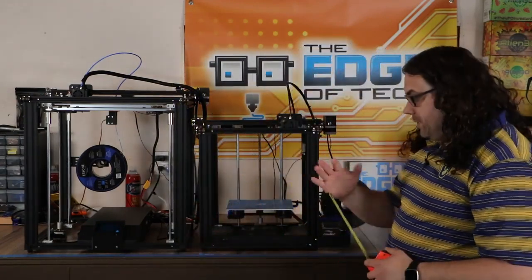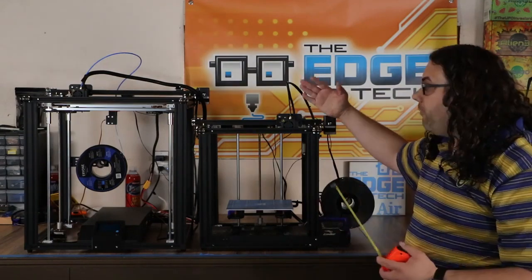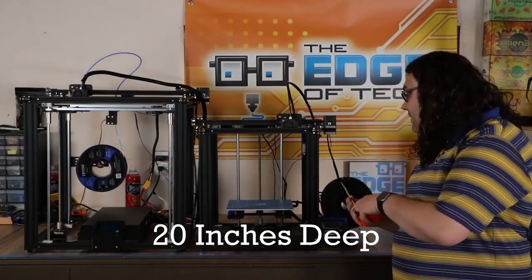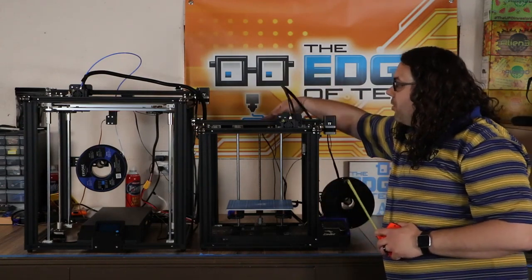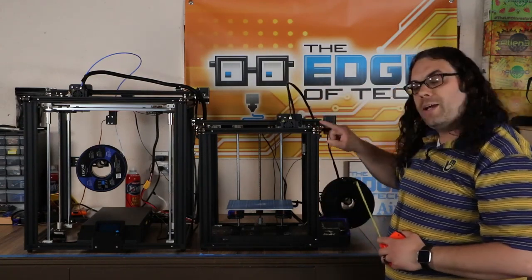Now if you want to talk about how deep it is, you're roughly going to need about 20 inches deep on the Ender 5 here, and that's just to clear the stepper motor that's in the back and your pulleys that are up front here.